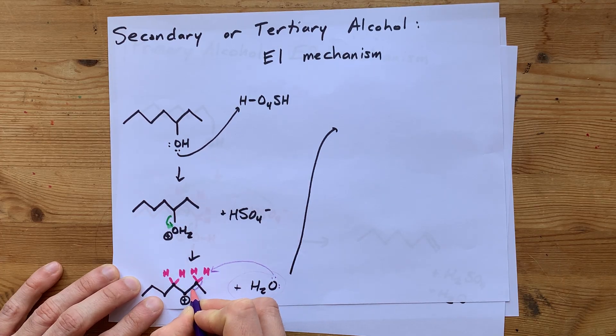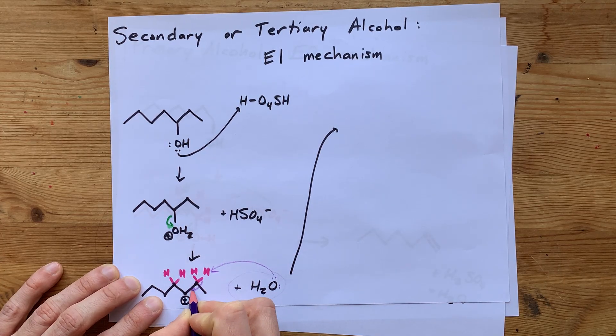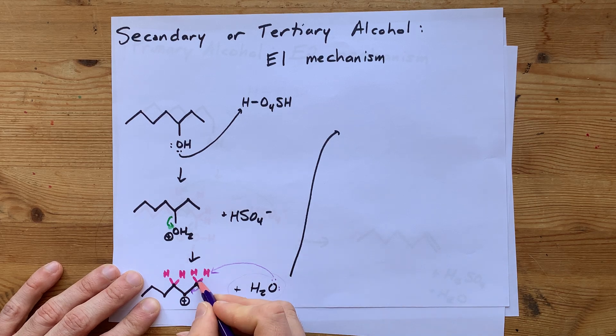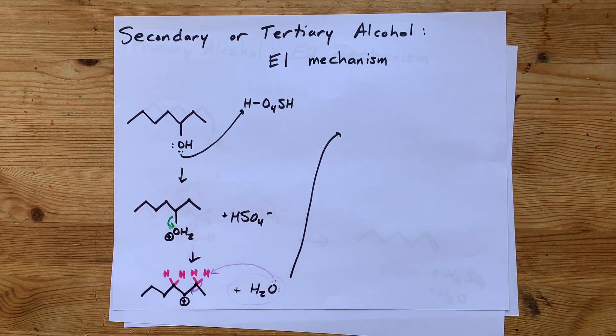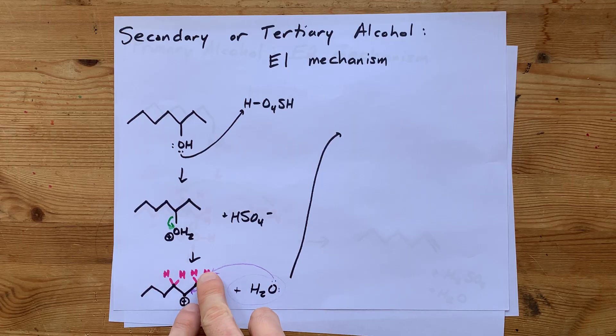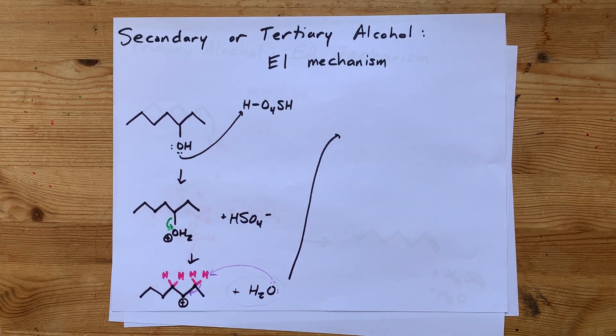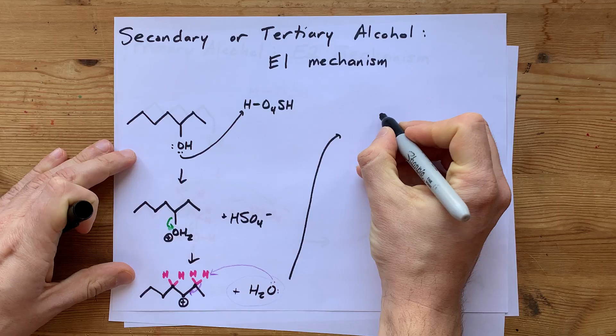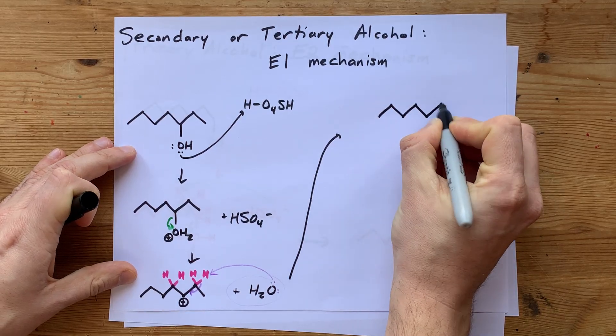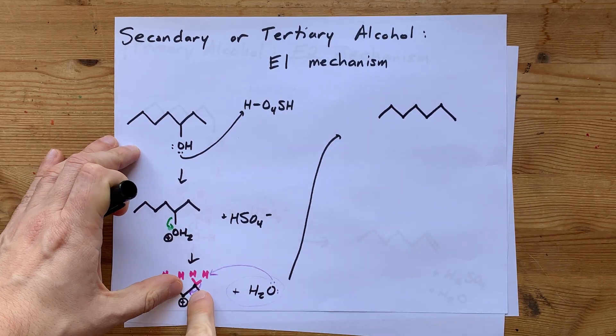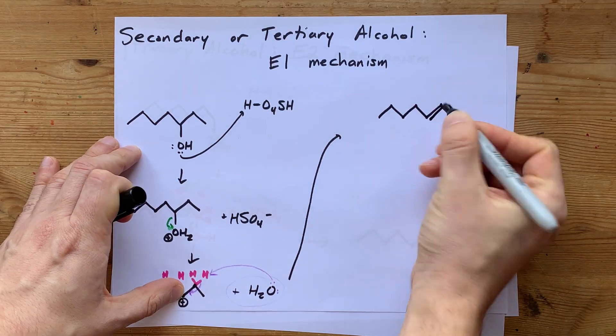Where are the electrons from this covalent bond going to go? Well, they're going to flow towards the positive charge because electrons are negatively charged and negatives and positives attract each other. If you pluck a hydrogen off of this carbon here, then your resulting molecule will have a double bond between those two carbons. Now, is it going to end up being cis or trans?